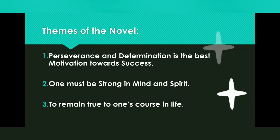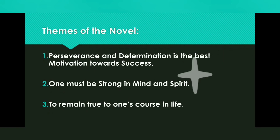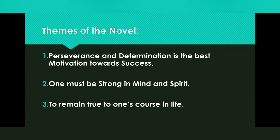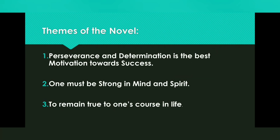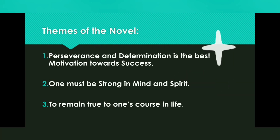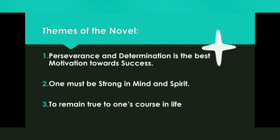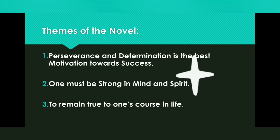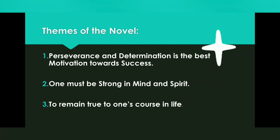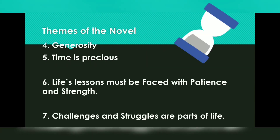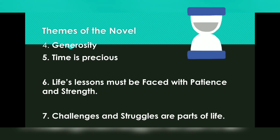The second important theme is that one must be strong in mind and spirit to be able to face any adversities — like Fogg, who is a disciplined and always punctual man. The third important theme is to remain true to one's course in life. Fogg together with Passepartout and Aouda have only one mission: to reach London before the 80 days are over. Although they think they have missed the bet by five minutes, Fogg is able to accept that he has lost not only the bet but also his money — showing himself a true gentleman.